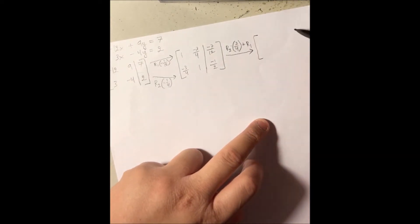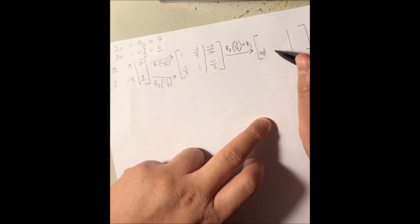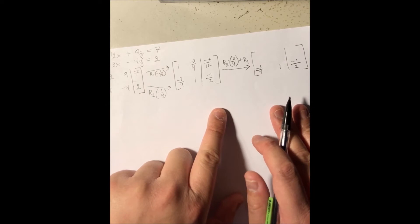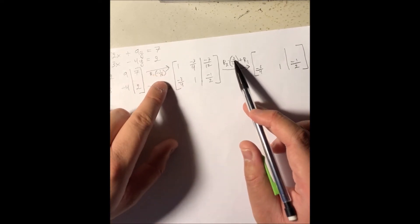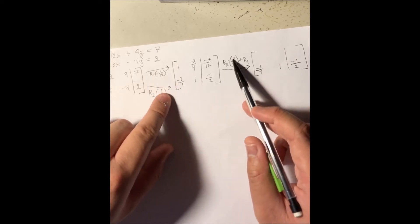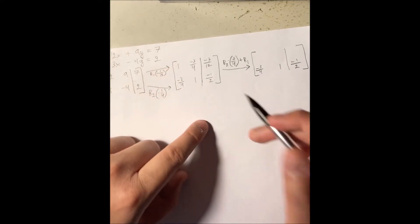As usual, the row I'm using for the multiplication — row 2 — will stay the same. But row 1, which is being added to, will change. So 3 over 4 times row 2: 3 over 4 times negative 3 over 4 is negative 9 over 16. Now negative 9 over 16 plus 1 — let's work that out.